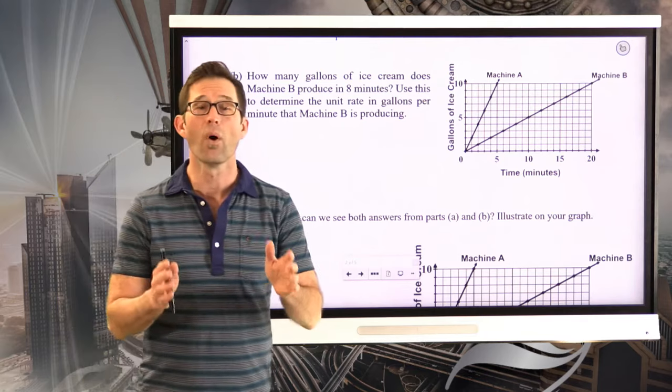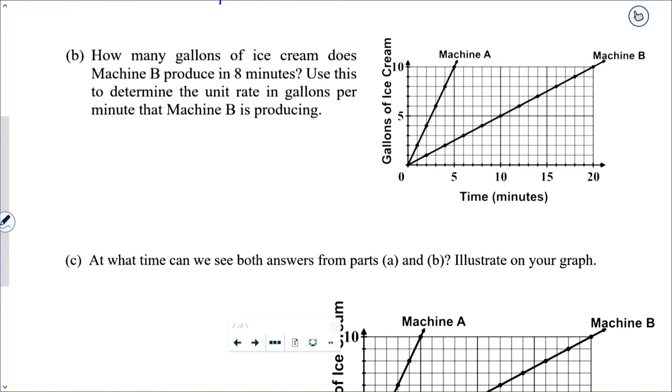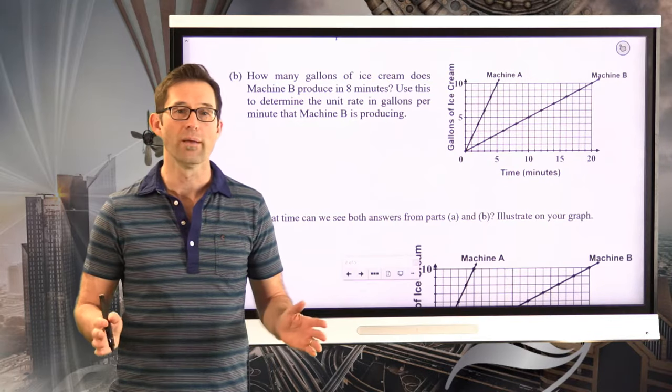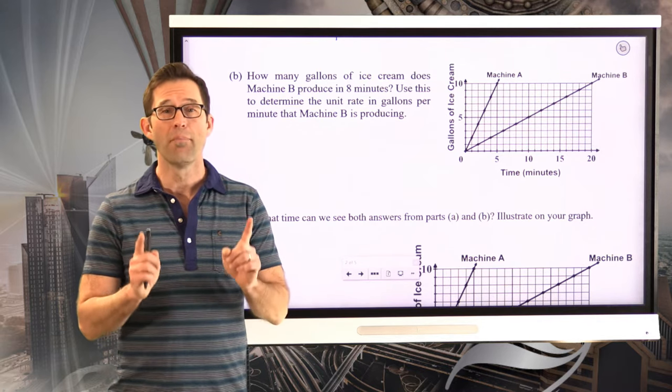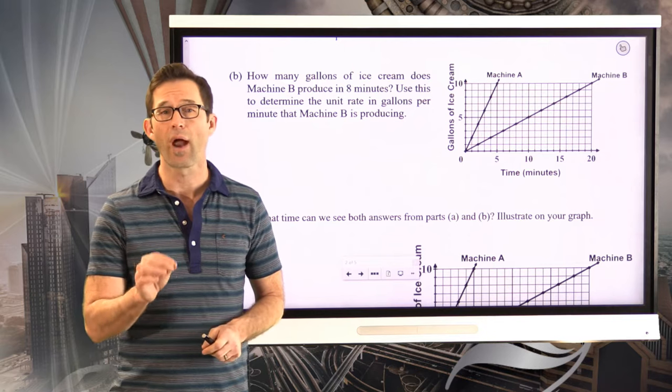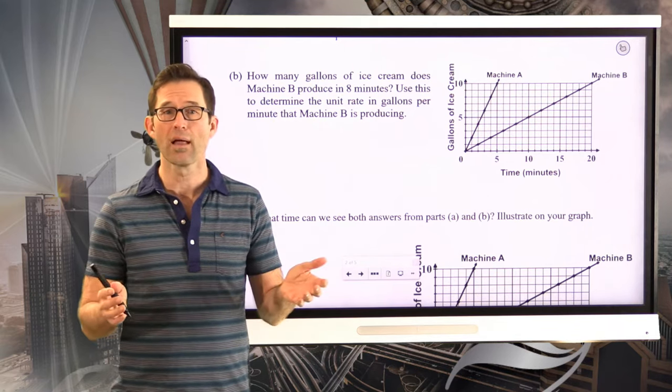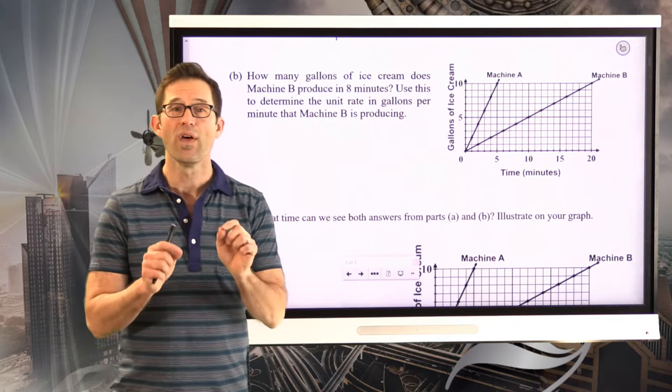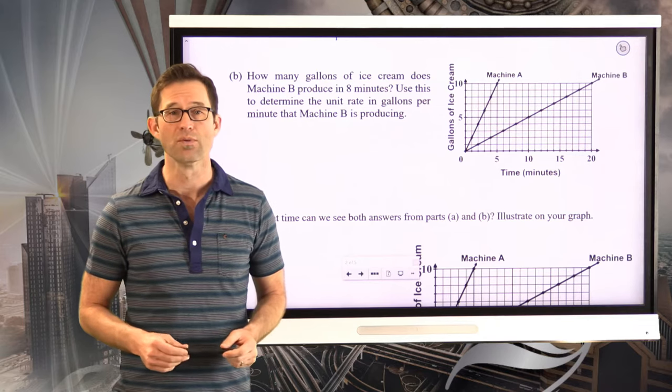Let's take a look at letter B, where we do almost the same thing for machine B. How many gallons of ice cream does machine B produce in eight minutes? Use this to determine the unit rate in gallons per minute that machine B is producing. So simple enough, we want to do exactly what we did in letter A, but spoiler alert, the answer here is going to be a fraction. So take a few minutes, figure out first how many gallons of ice cream machine B produced in eight minutes, then use that fact to produce the unit rate at which machine B is producing ice cream.